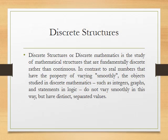We have Discrete Structures defined. The definition of discrete structure is: discrete structure, or discrete mathematics, is the study of mathematical structures that are fundamentally discrete rather than continuous. In discrete structures, we have discrete values, not continuous values — discrete values just like discrete numbers 1, 2, 3, 4, 5, and so on. These numbers are called discrete structure or discrete numbers.